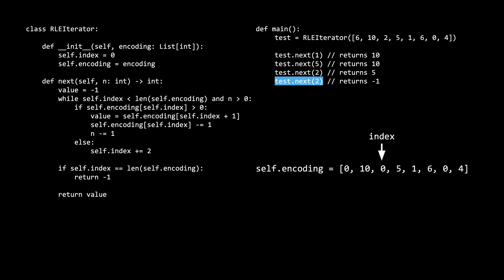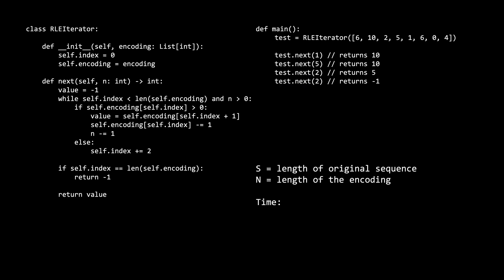At this point I'm going to stop tracing through the solution, but you should check for yourself that the last call to test.next(2) returns negative 1. Hopefully at this point you have a better understanding of the solution. Let's discuss the time and space complexity.